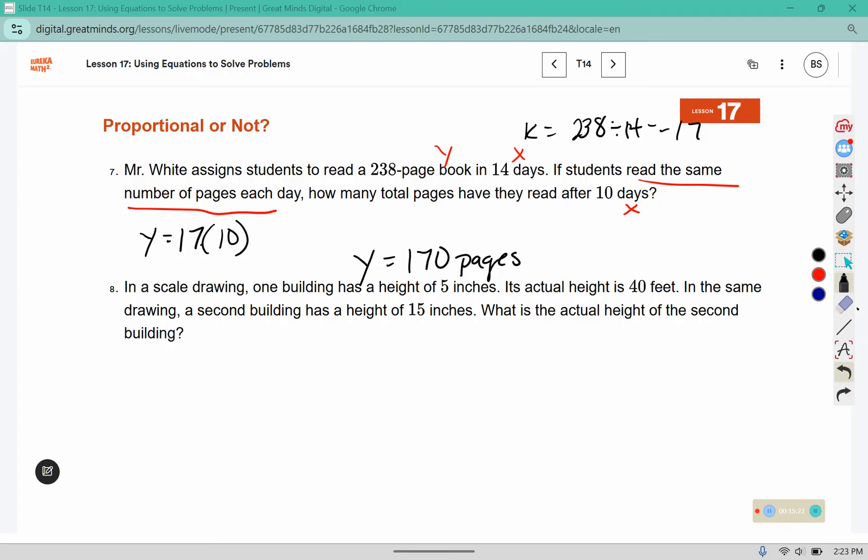In a scale drawing one building has a height of 5 inches and its actual height is 40 feet. This is inches this one's feet. A second building has a height of 15 inches, what is the actual height of the second building? Scale drawings do use constants of proportionality or in a scale drawing situation it's called a scale factor but we can find it the same way. So we're going to divide 40 by 5 to figure out what k is so that would be the y value and the x value. 40 divided by 5 is 8. 8 is our constant so we're going to replace this x with the number 15 to determine the length of the big version in the large drawing. 8 times 15 is 120. So it would be 120 feet.